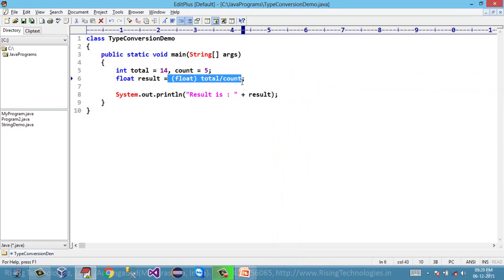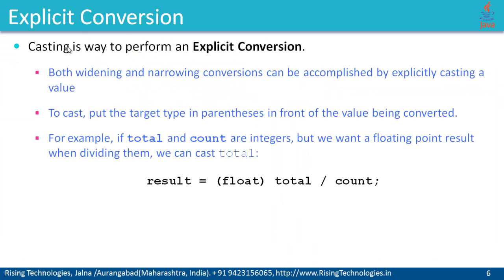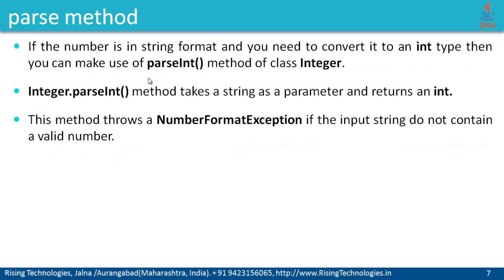These are the situations where we need to convert the data — remember to convert the type of a particular expression or variable to a desired type using type conversion or type casting. We can perform both widening as well as narrowing conversions. Another way to convert data is from string to another type — that is parse methods.